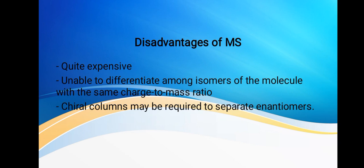Mass spectrometry is unable to differentiate among isomers of the molecule with the same charge-to-mass ratio. We also find that chiral columns may be required to separate enantiomers. That's what we have today about mass spectrometry. Stay tuned for more, thank you.